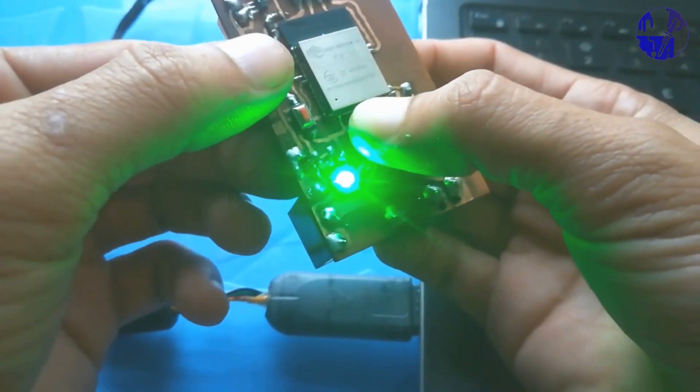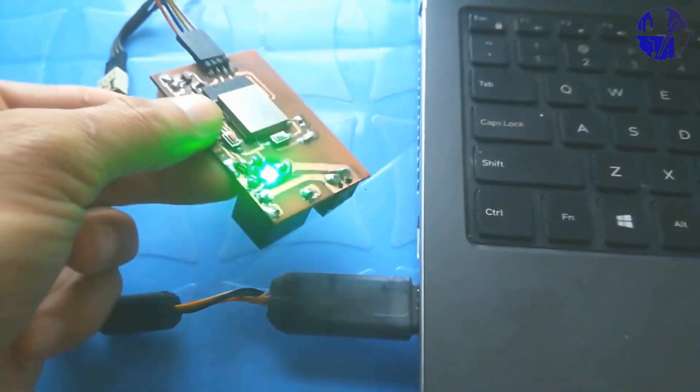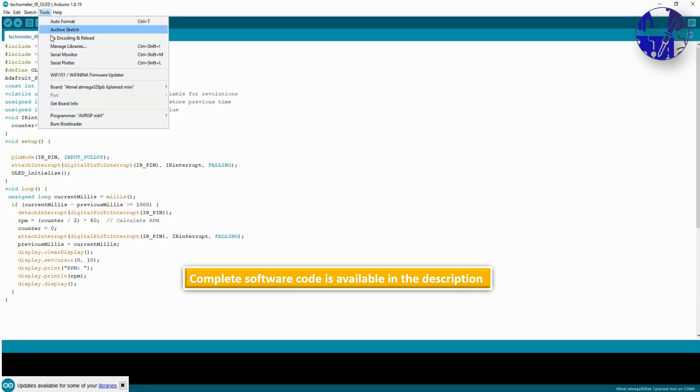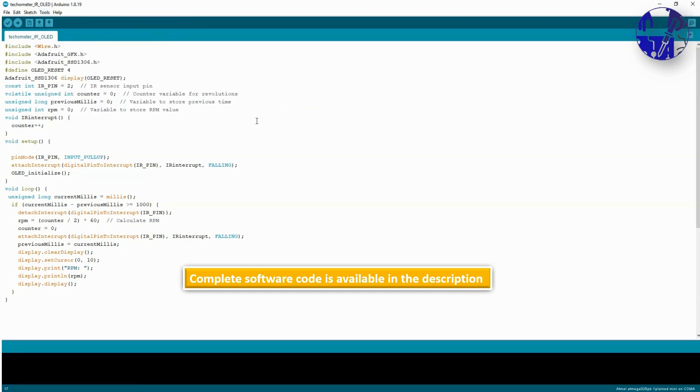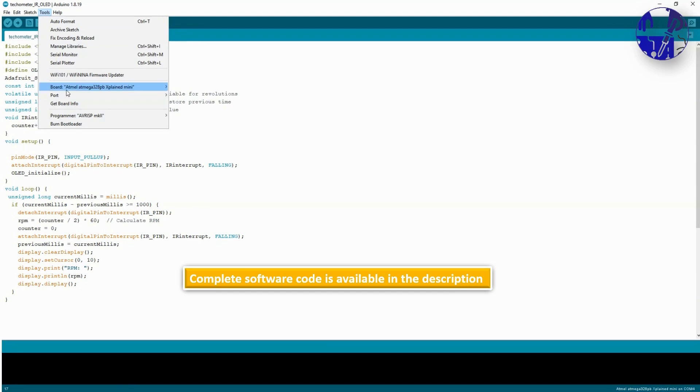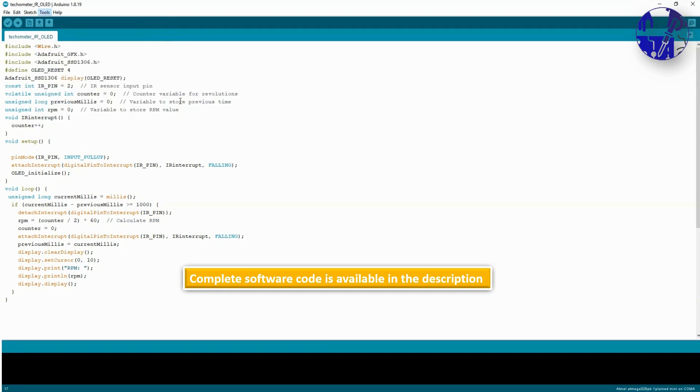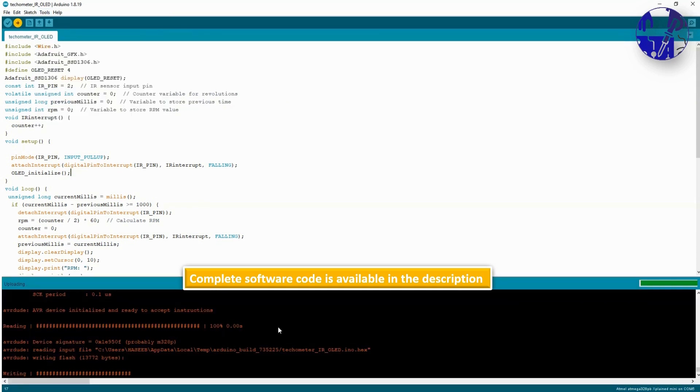Now upload the software into the ESP32. Simply copy all the code from the description section or follow the link provided. Paste the software code into the ESP32. Now you have the device ready to work.